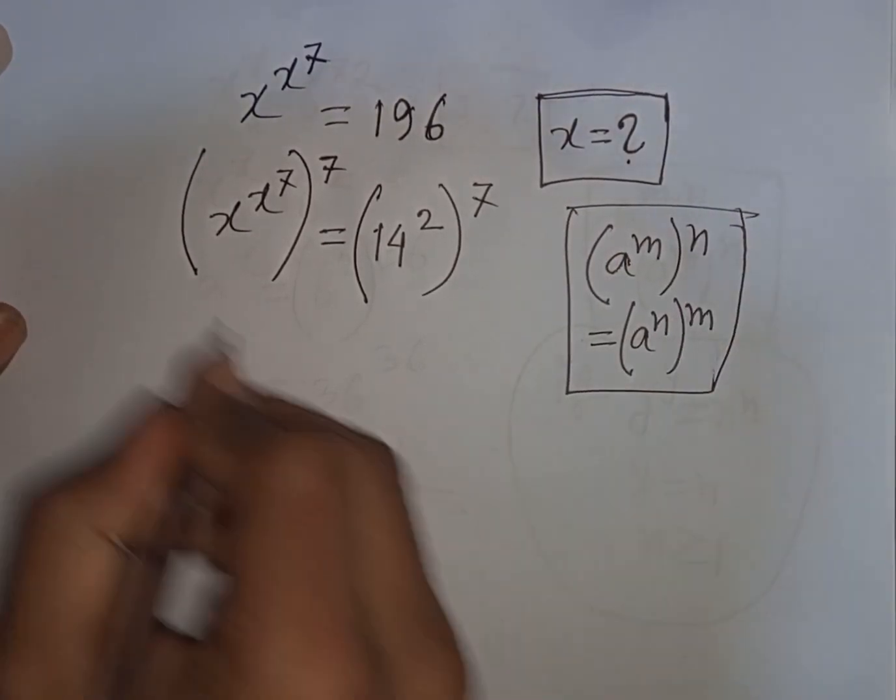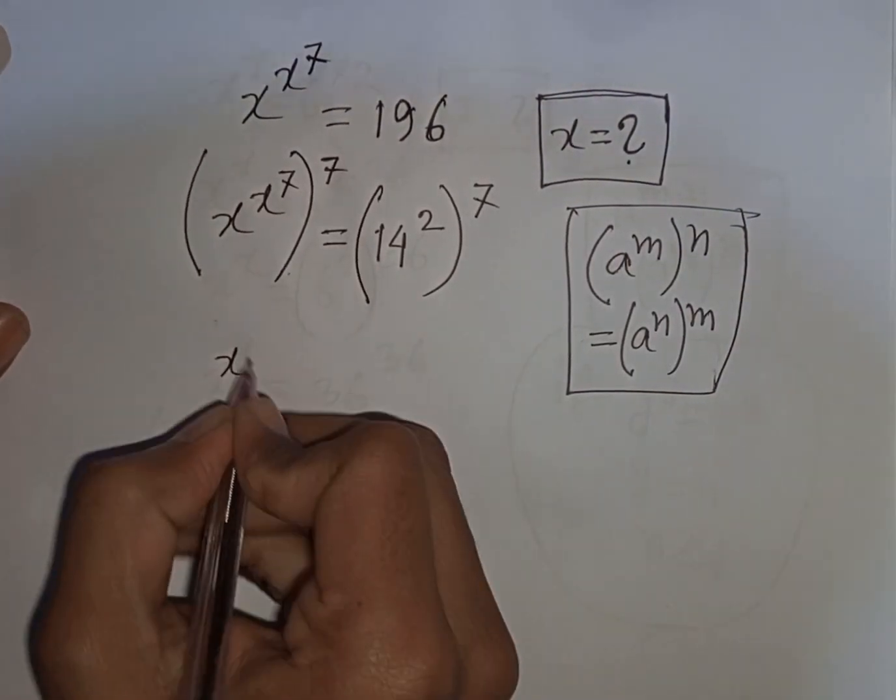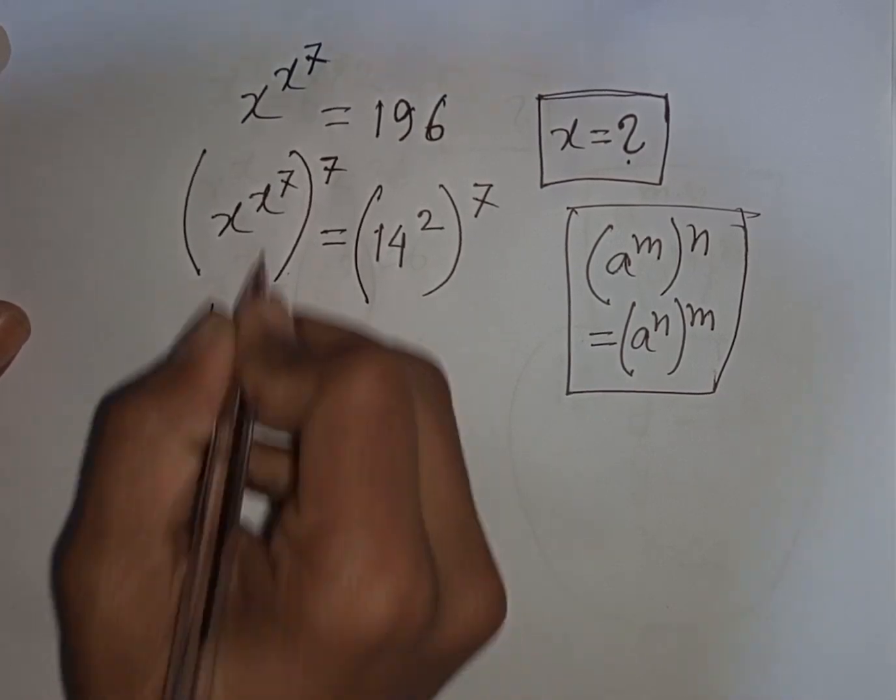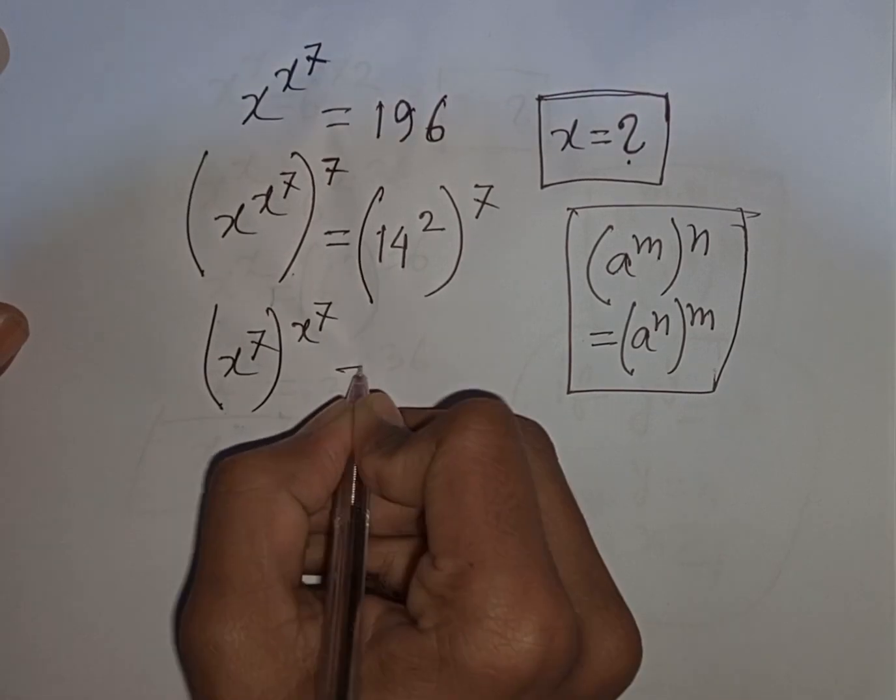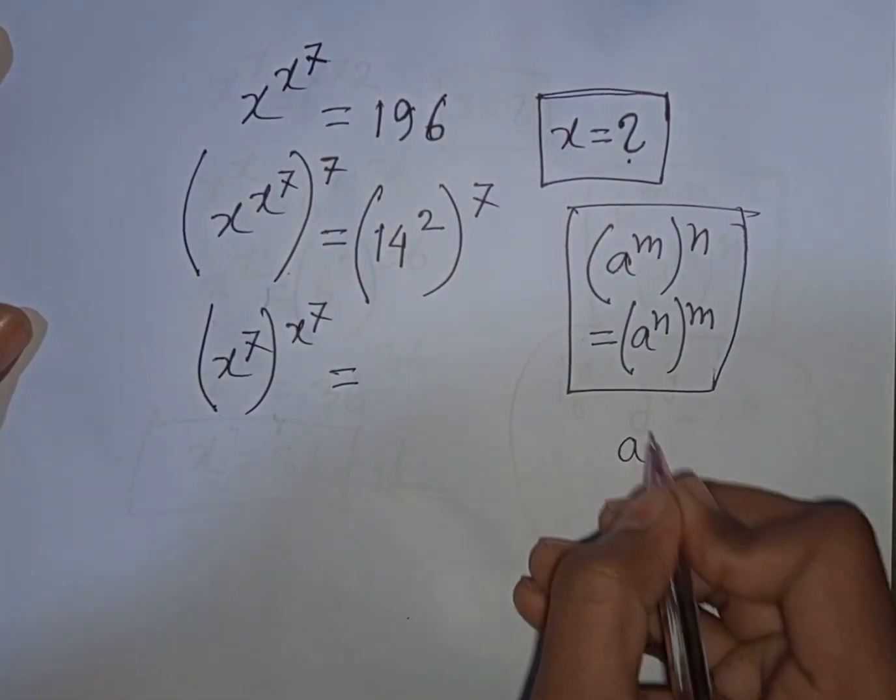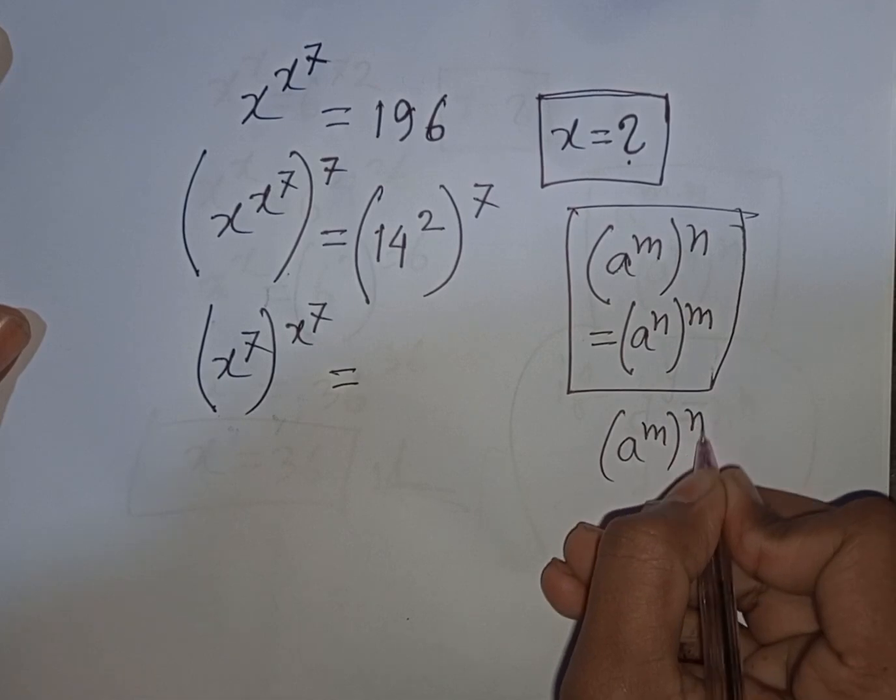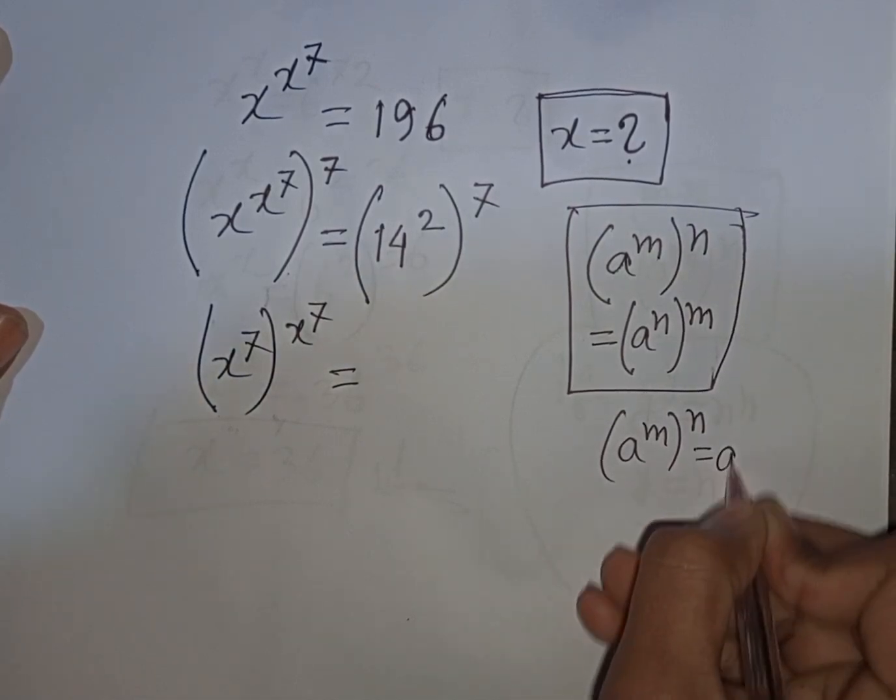On the left side, we have (x^7)^(x^7). On the right, you can apply the formula (a^m)^n equals a^(mn). So according to this formula, I can write 14^(2×7).